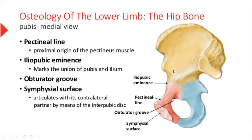In the medial view of pubis, we have a pectineal line here, iliopubic eminence, then we have an obturator groove, and this is the symphyseal surface. It is called symphyseal surface because here is the pubic symphysis. This is the right hip bone, and this is the left hip bone. Where both hip bones meet, they are joined through pubis — this is why it is called pubic symphysis.